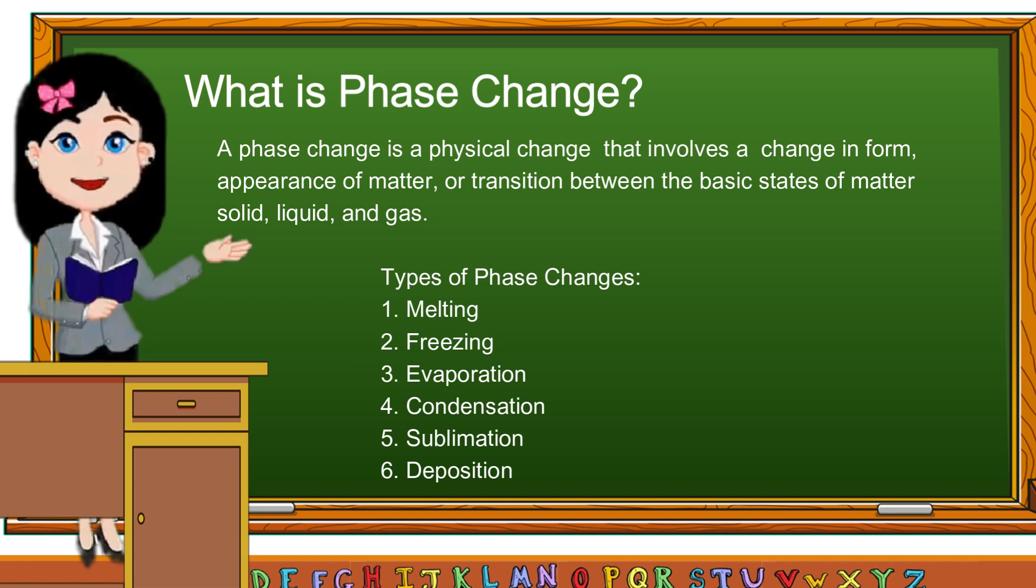Phase changes occur when temperature changes. Melting, freezing, evaporation, condensation, sublimation, and deposition are the changes that may occur when heat is added or removed to a substance.